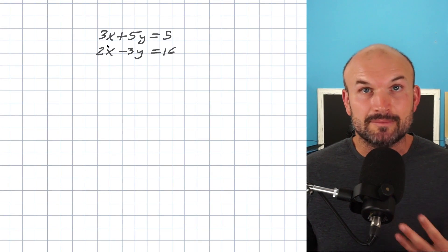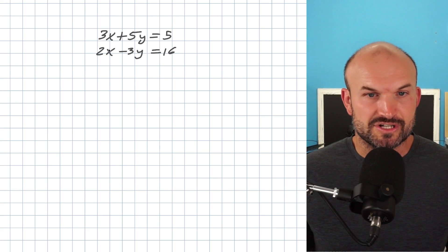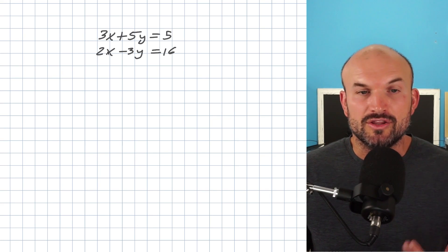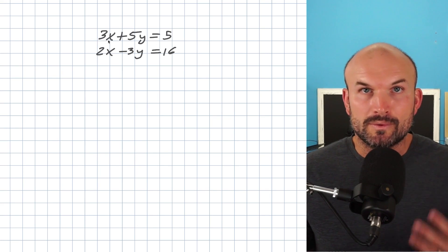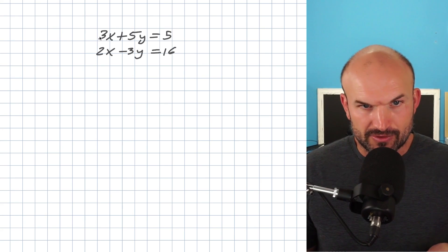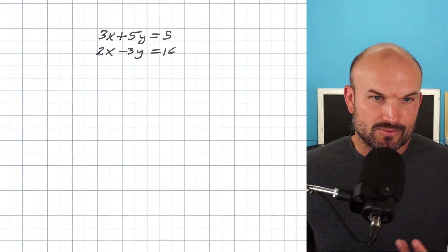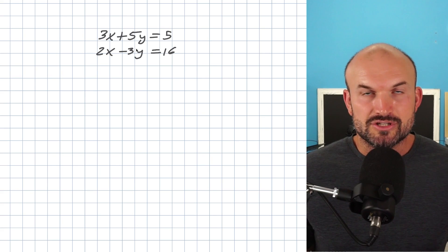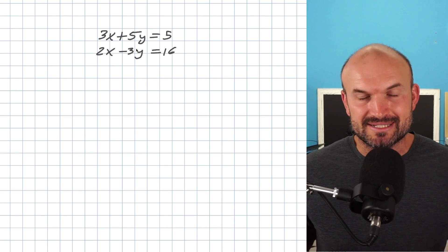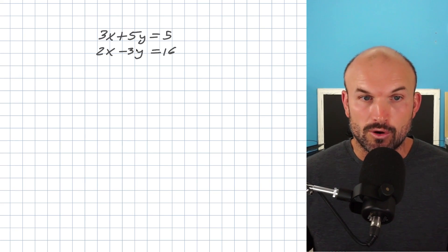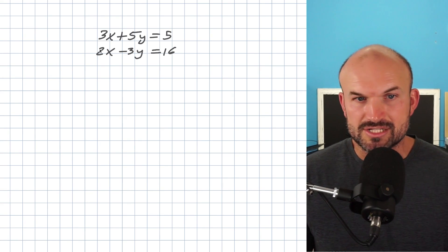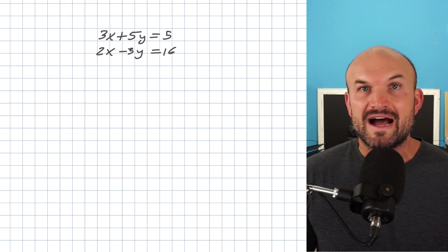In this first example is a classic problem that always seems to show up. You have every variable that has a coefficient, and unfortunately, there's not a single scalar that I can multiply one equation by to get the other coefficient value. Remember, when we're using elimination, we want the coefficient of our variables to be exactly the same. There's no integer I can multiply by three to get to two, and there's no integer I can multiply by two to give me three. The same thing applies for five and negative three.